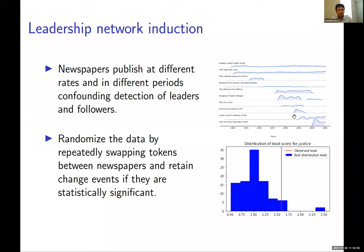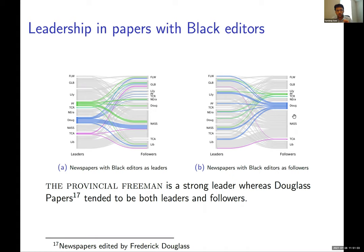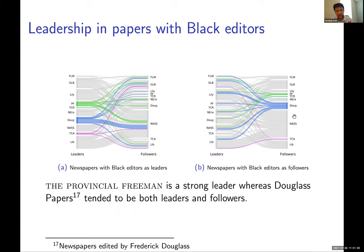Once we have statistically significant newspaper pairs, we construct the newspaper network and analyze it. Looking at when newspapers had black editors as leaders versus followers, and separately when they had female editors, some patterns emerge. The Provincial Freeman turns out to be a strong leader. Papers edited by Frederick Douglass tend to be both leaders and followers.